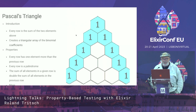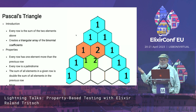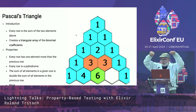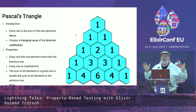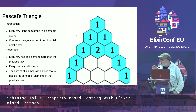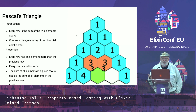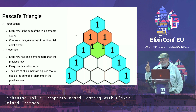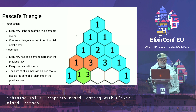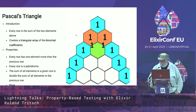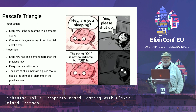Let's do a quick example: Pascal's triangle. Every row is the sum of the two values in the row above, and it creates a triangular array of binomial coefficients. The triangle has a couple of very interesting properties: every row has one element more than the previous row; every row is a palindrome; and the sum of all elements in a given row is double the sum of all elements in the previous row. There are many more properties — left as an exercise for the reader. So let's talk about palindromes.